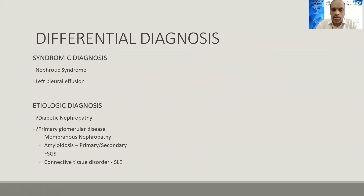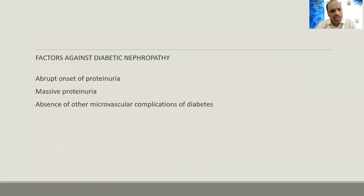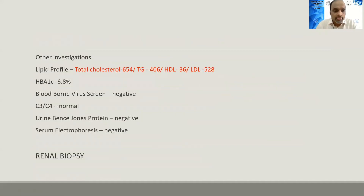Initial investigations: creatinine 0.7, total protein 4.9, serum albumin 1.9, with 3+ glycosuria and 4+ proteinuria; urine protein-to-creatinine ratio of 14.77. The syndromic diagnosis is nephrotic syndrome with a left pleural effusion. Factors against diabetic nephropathy include abrupt onset of massive proteinuria and absence of microvascular complications. The lipid profile showed severely deranged lipids — dyslipidemia out of proportion to what is expected in diabetes suggests a primary glomerular disease causing nephrotic syndrome.